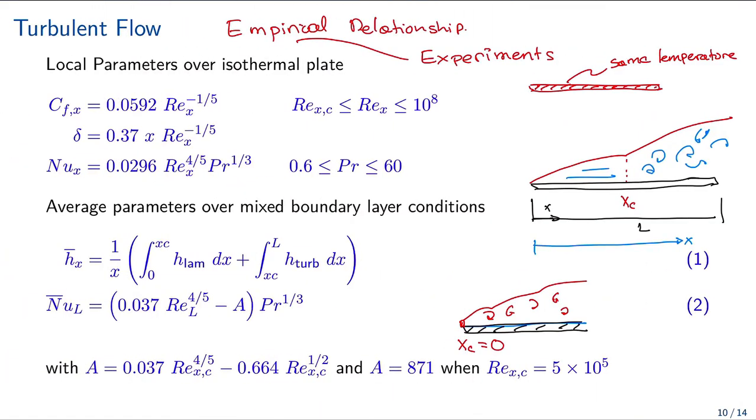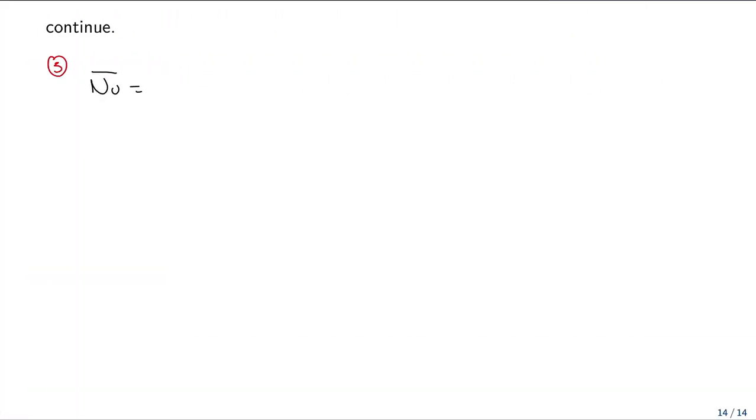We have to use the equation for mixed condition. We need to use this equation for the mixed condition in which A is going to be given by 871 because we are using Reynolds critical as 5 times 10 to the fifth. So Nusselt is equal to 0.037 multiplied by 1.04 times 10 to the sixth to the fourth fifth minus 871 multiplied by 0.7 which is Prandtl to the one third. So Nusselt after replacing these values is equal to 1367.